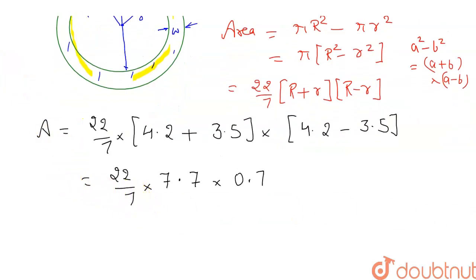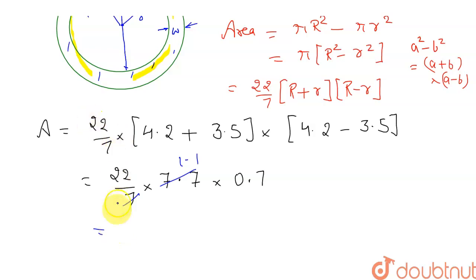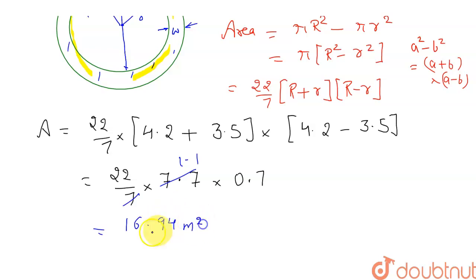We can cancel the 7 in the denominator with 7.7, giving 1.1. So the area equals 22 × 1.1 × 0.7, which comes out to 16.94 square meters.